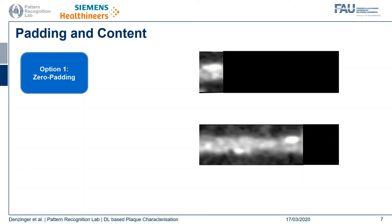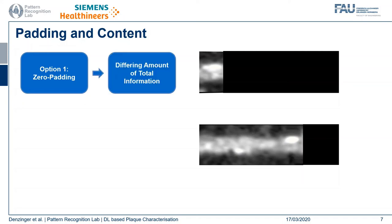The obvious option, which is most commonly used, is to just use zero padding — all lesions are brought to the same length by adding zeros at the end. However, this introduces a differing amount of total information provided by each single segment, which is problematic since the network most probably only learns from or is heavily influenced by the length of the sequence.